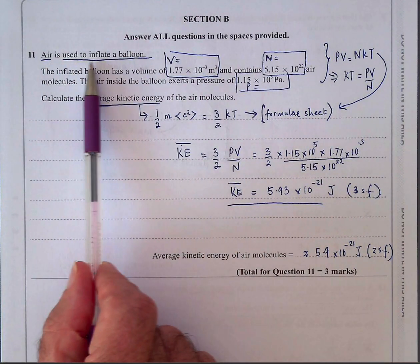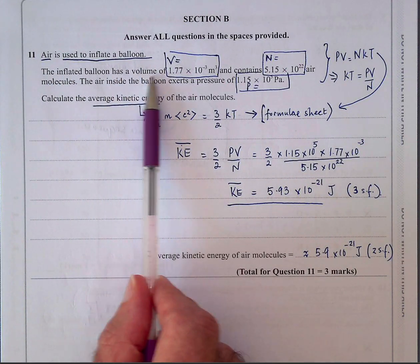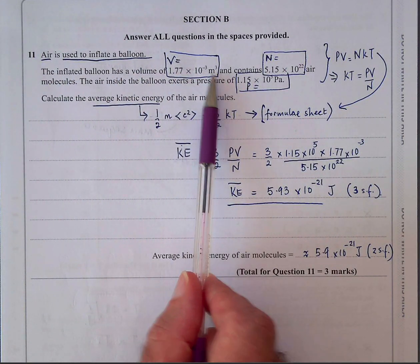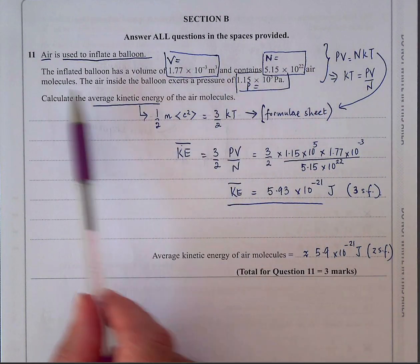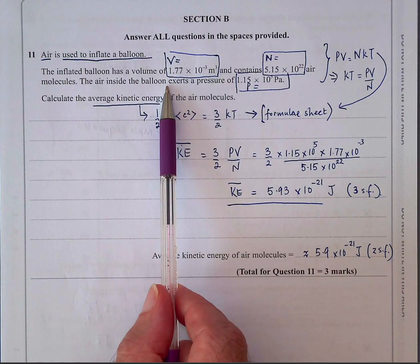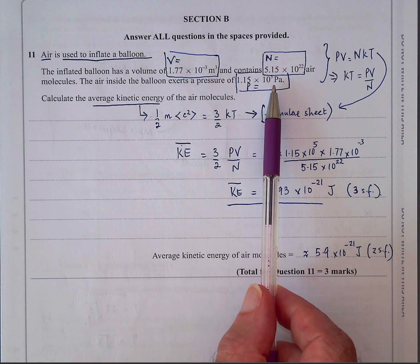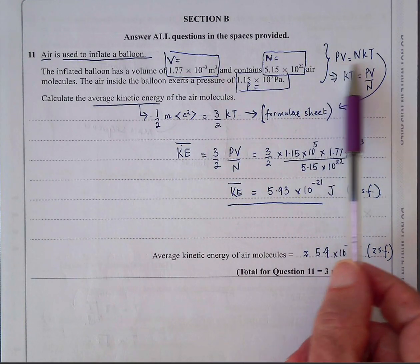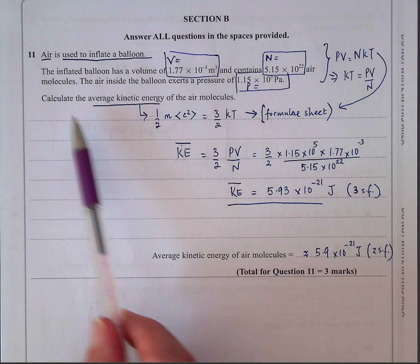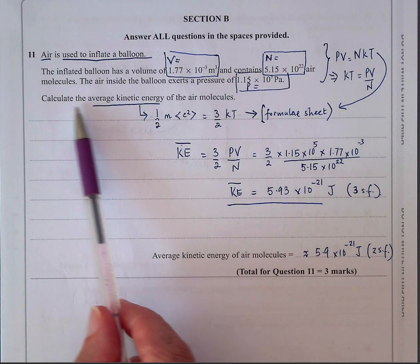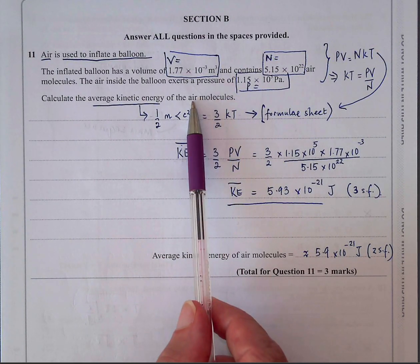Answer all questions. It says air is used to inflate a balloon. The inflated balloon has a volume given in meters cubed and contains this number of particles. The air inside the balloon exerts a pressure of this number of pascals. So everything's in SI units. The equation you've got to use is PV equals NKT. What are they asking? They want you to calculate the average kinetic energy of the air molecules.